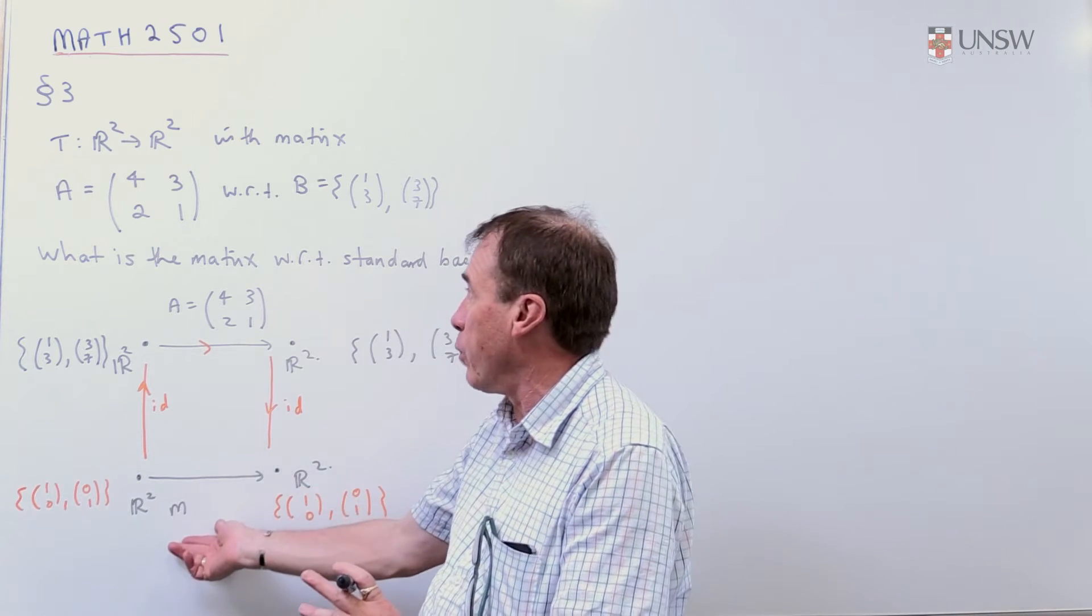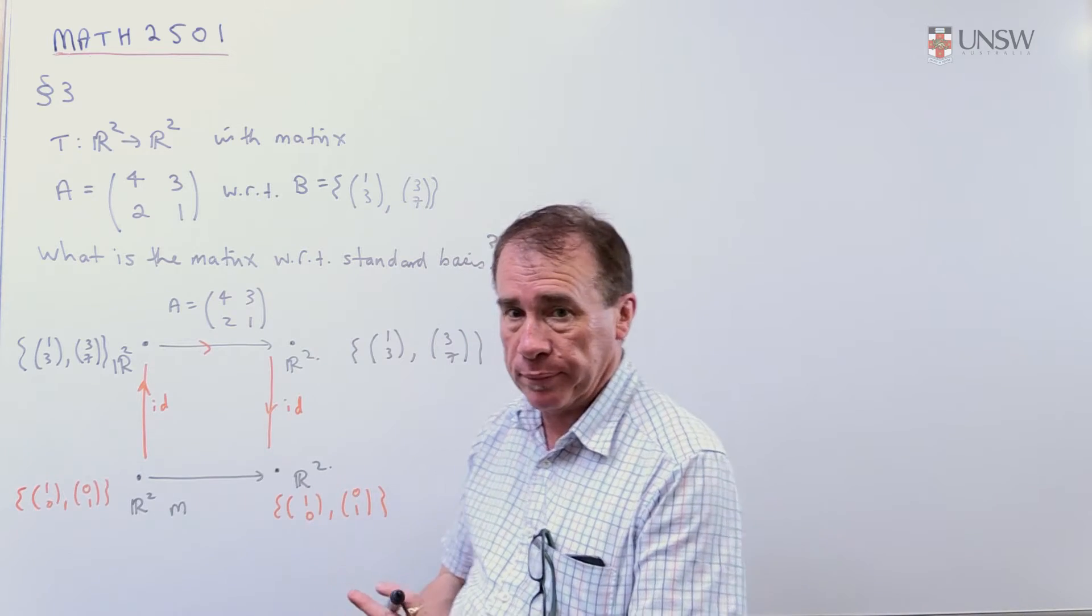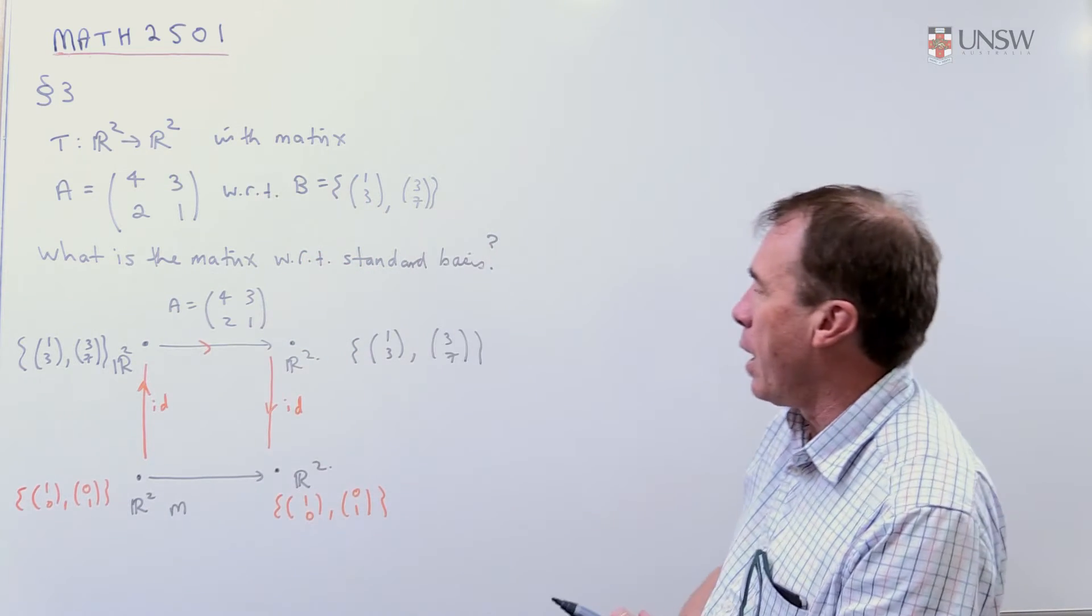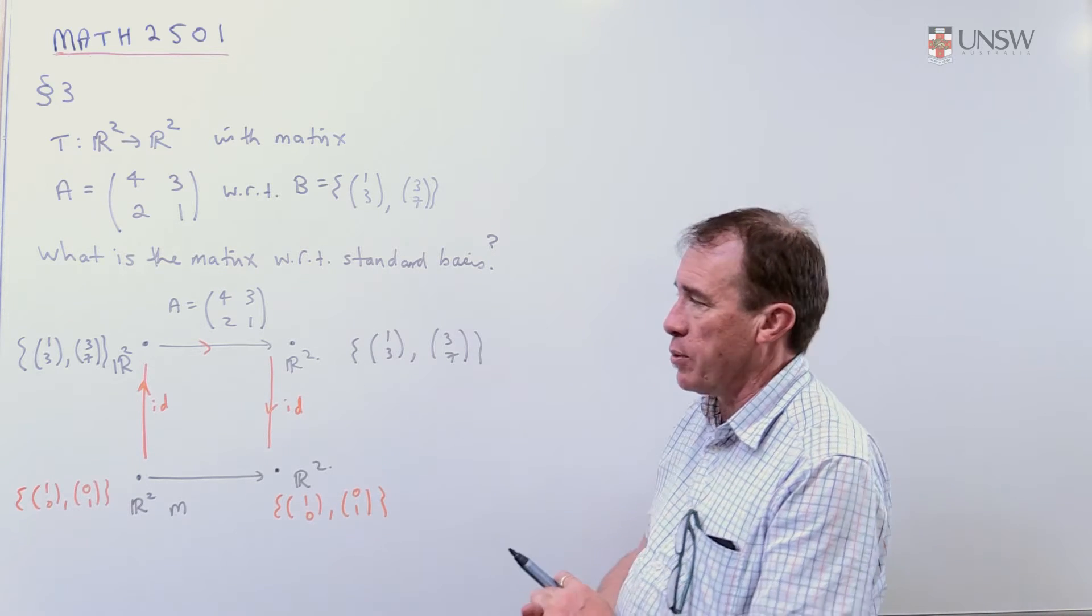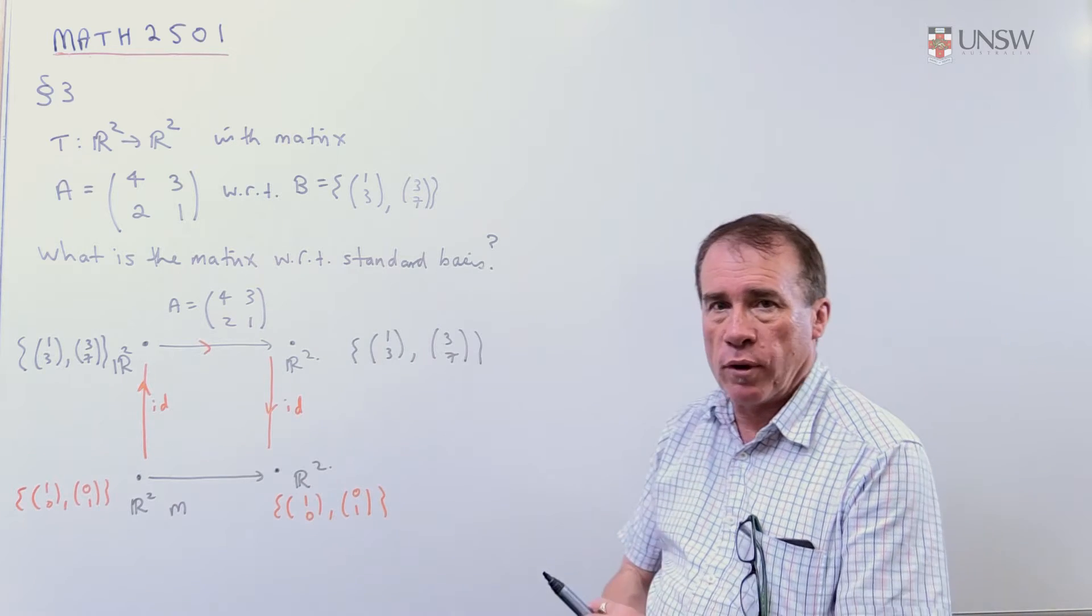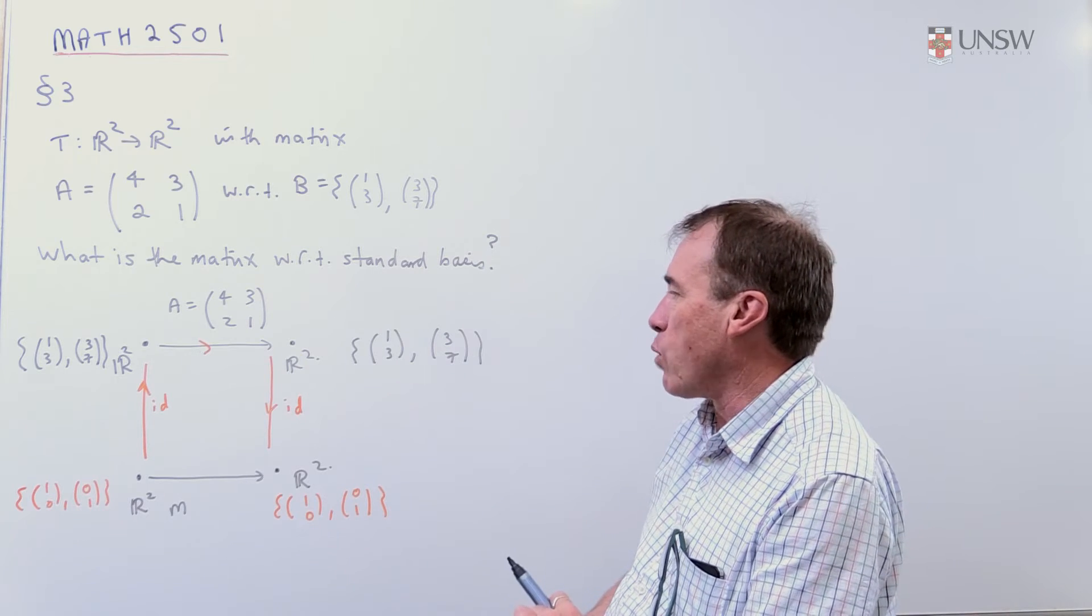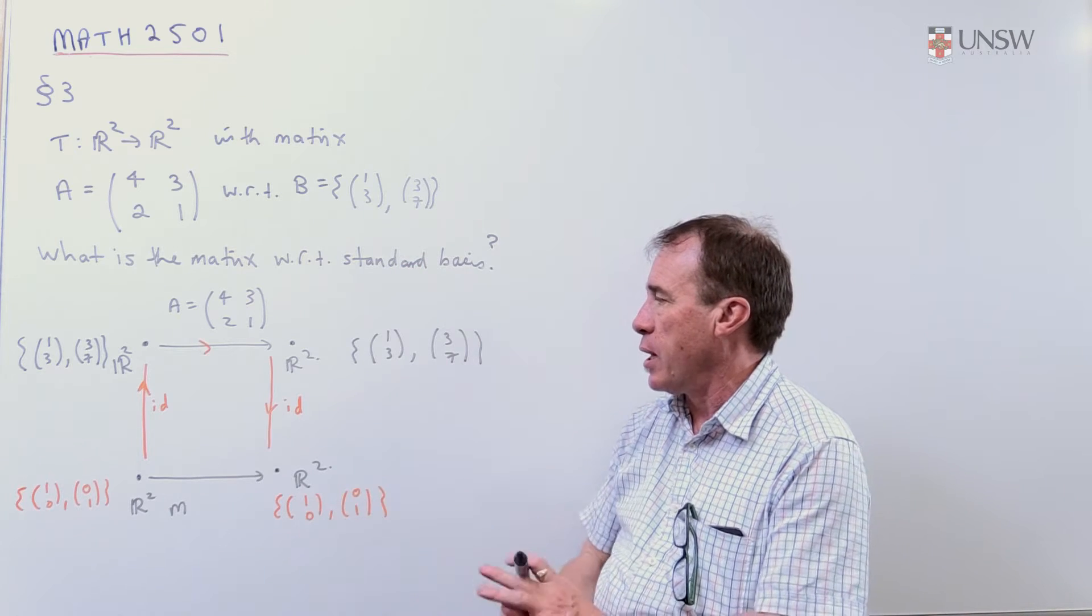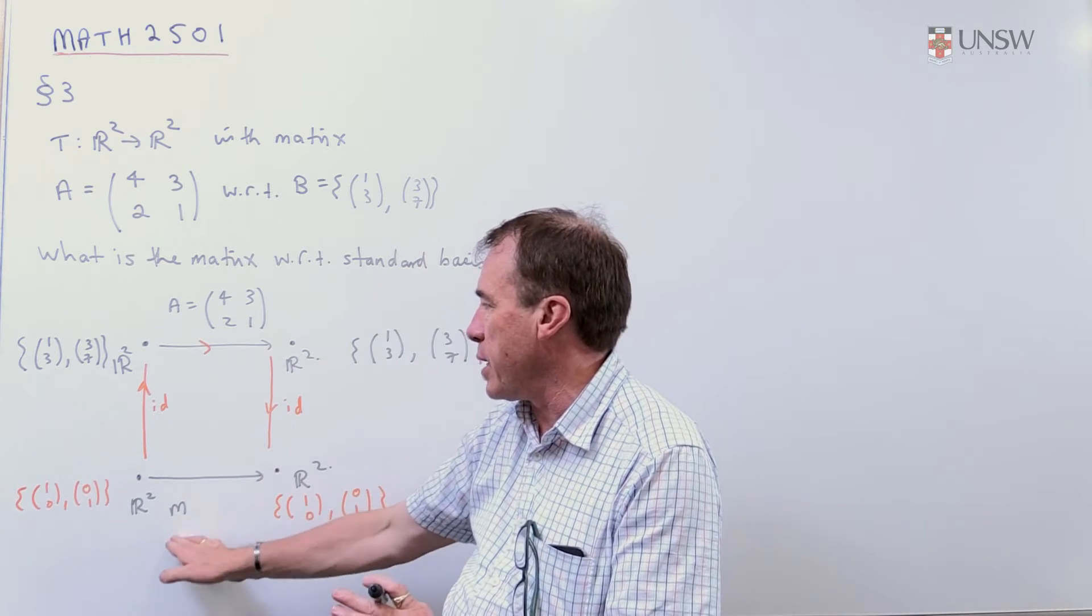Once we know that matrix, in fact, we can even write down a nice simple formula for this linear map, whereas in this form it's not so easy to see. So the question is, what is the matrix with respect to the standard basis? To do these sorts of problems, I like to draw up what is commonly known in the trade as a commutative diagram, which simply is a way of representing the information that we've got here and tells us what we're looking for, which is the matrix N down here on the bottom.